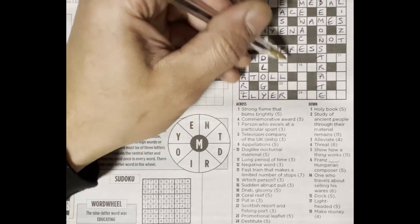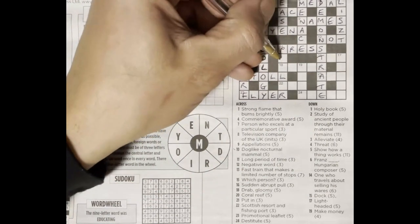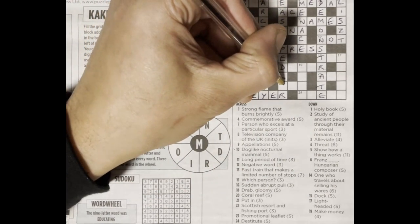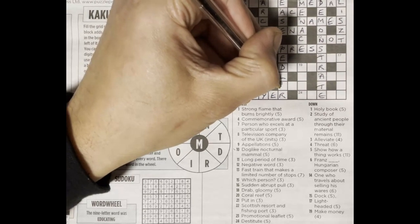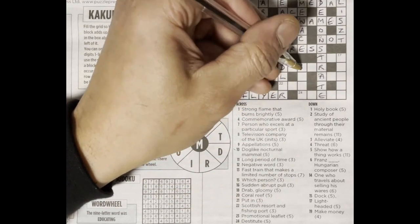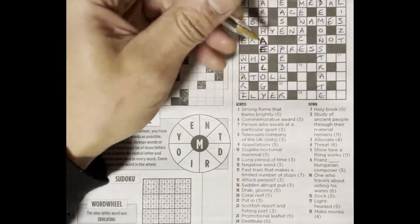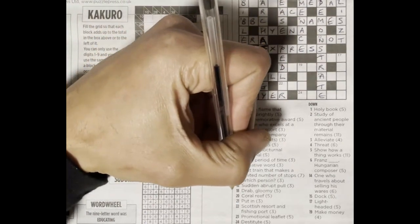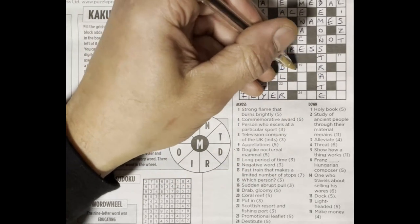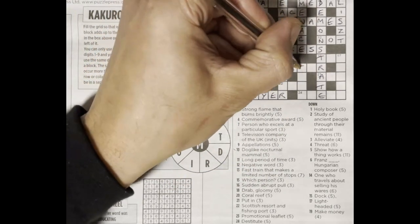So this helps me. Fourteen down, one who travels about selling his wares, peddler. Is it A-I-R? I think it's A-Y-R. Nineteen down, make money. Eighteen across, drab gloomy, drear, D-R-E-A-R. We got E-A-R.